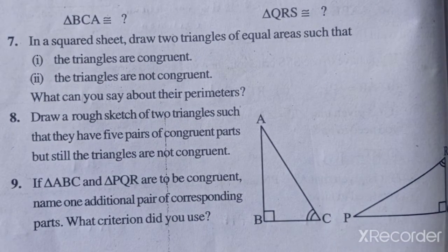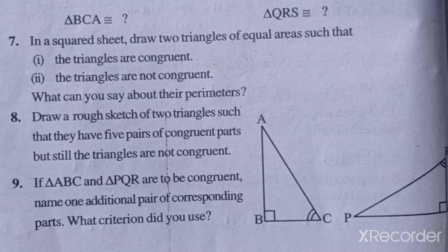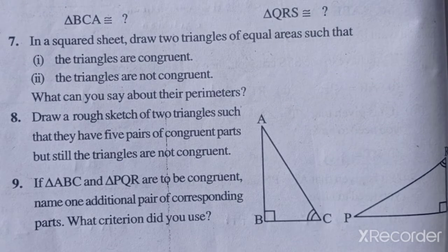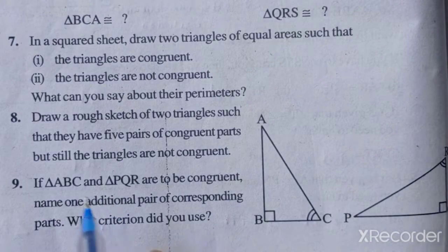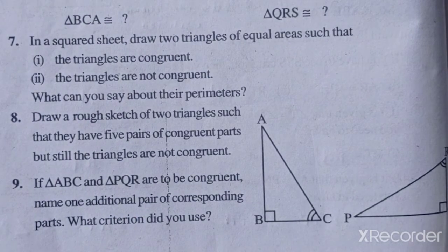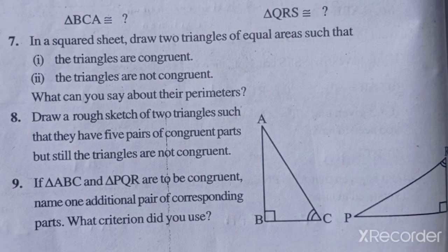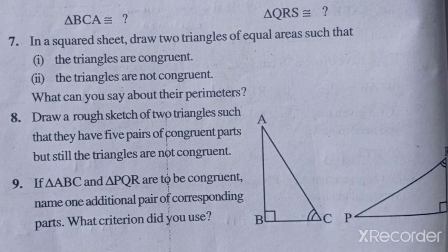So here we have a rough diagram drawn here. The angle is the same, side is the same, but the triangles are not congruent. The triangles that are the same, they are called congruent.